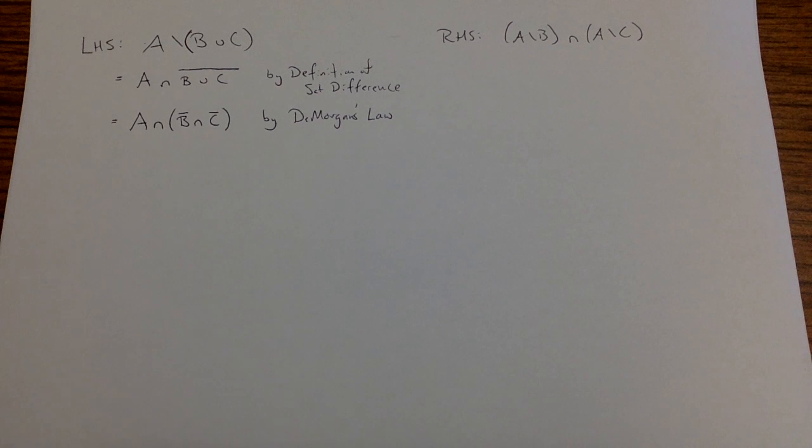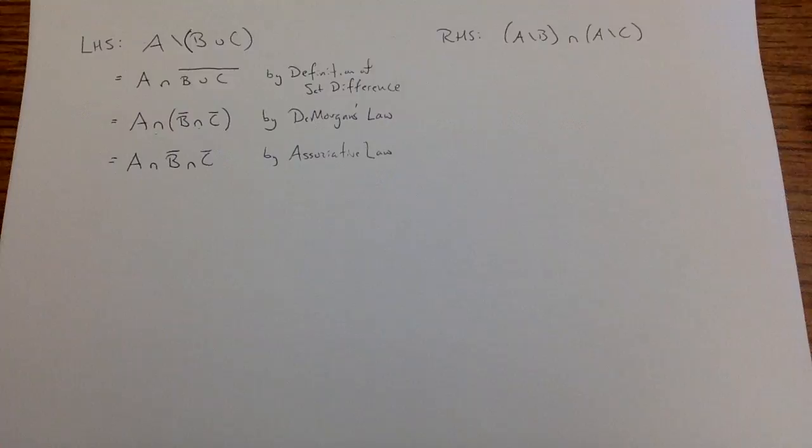So now I have DeMorgan's Law and now if I see this, I see that there's an intersection on both sides and that just commutes and associates. So I'm just going to remove my parentheses. So now I see exactly one instance of each set A, B and C. All of my complements are directly above my sets and I don't have any combinations of unions or intersections to do anything distributive.